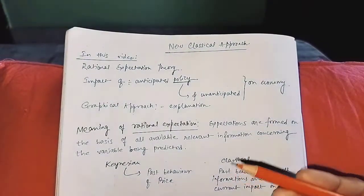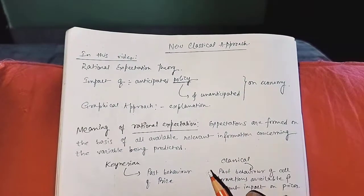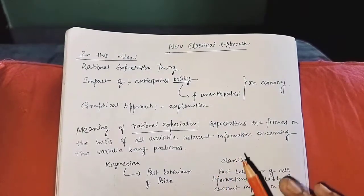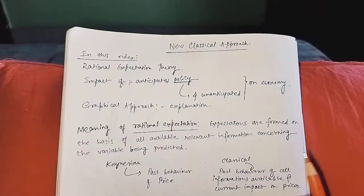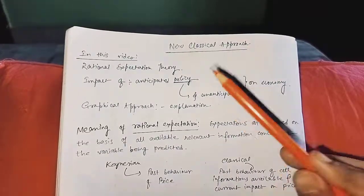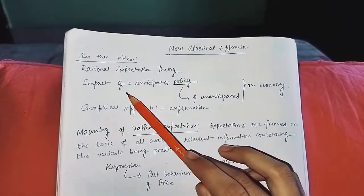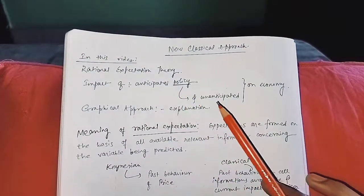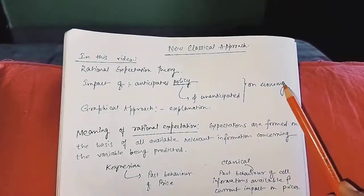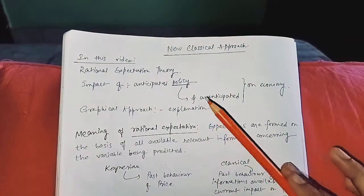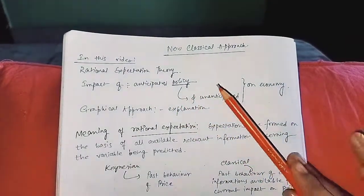Now, when it came, the classical theory has found some reason before opening it. Today, we will discuss rational expectation theory. Before I tell you what is going to happen in the video, rational expectation theory and impact of anticipated policy and unanticipated policy on economy, I will tell you what is actually what is.